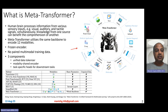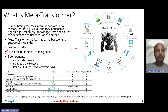An important point about this model is that it has a frozen encoder, so when evaluating for a particular task, you don't fine-tune for that task. Also, unlike other models like ImageBind, there is no paired multimodal training data used to train this model.